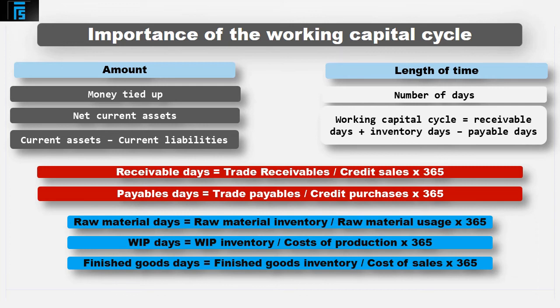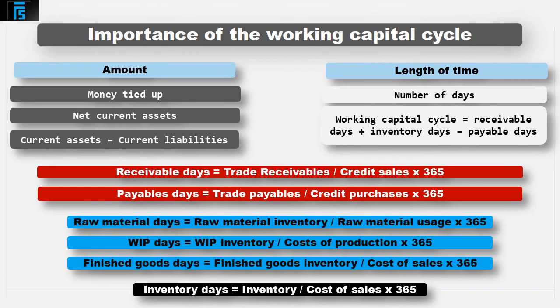Depending on the accounting information readily available, it may be easier and or necessary to combine the raw material, WIP and finished goods days into one inventory calculation, expressed as inventory days. Inventory days will be inventory, divided by cost of sales, multiplied by 365.